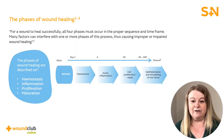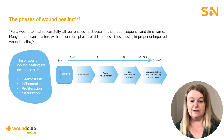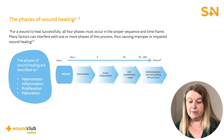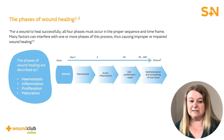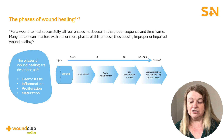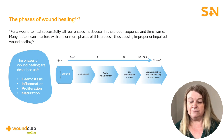A wound occurs when the integrity of any tissue is compromised. Examples of these are skin breaks, muscle tears or burns. It may be caused as a result of a fall, a surgical procedure, an infectious disease or an underlying pathological condition. It is generally associated with a loss of tissue and an impairment of function.